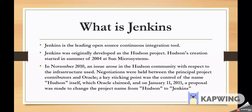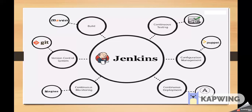So the Hudson project is now called Jenkins. Jenkins is a leading open source continuous integration tool used to achieve CI and CD in projects — continuous integration and continuous delivery. Looking at this diagram, Jenkins is the main tool interacting with several other tools: Maven as a build tool, Git as a version control tool, Nagios for continuous monitoring, Selenium and JUnit as continuous testing tools, Puppet for configuration management, and Ansible for continuous deployment.